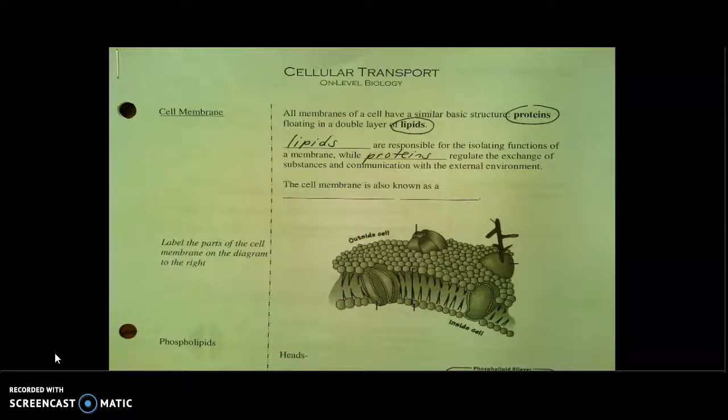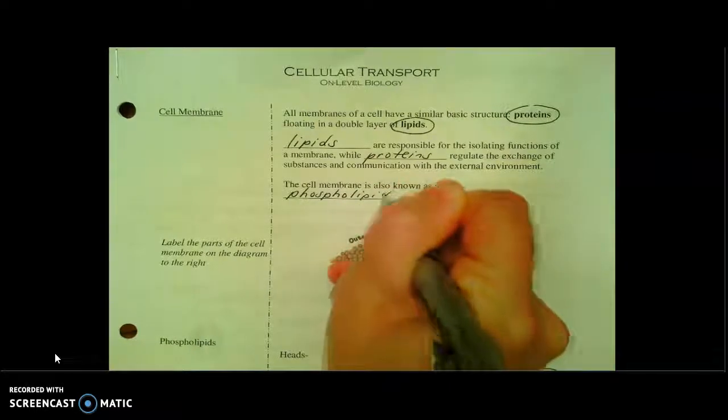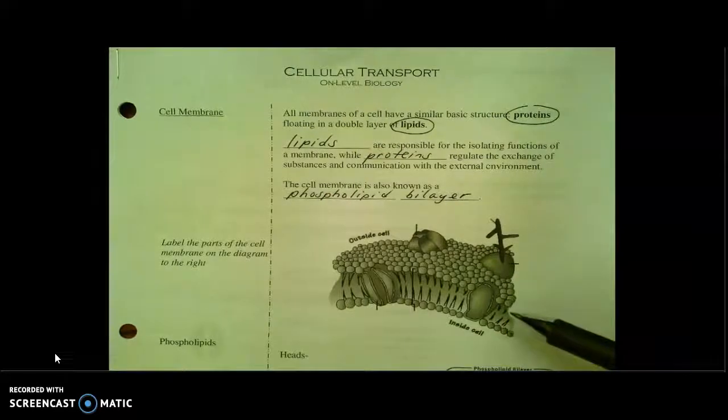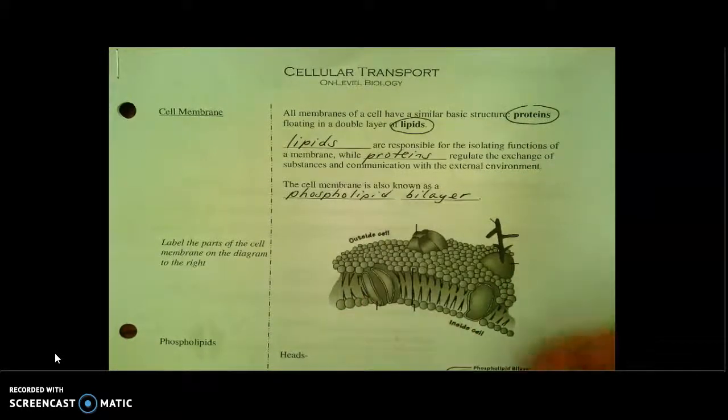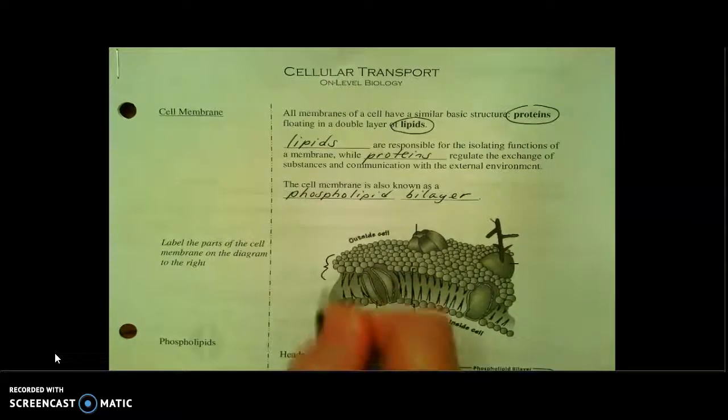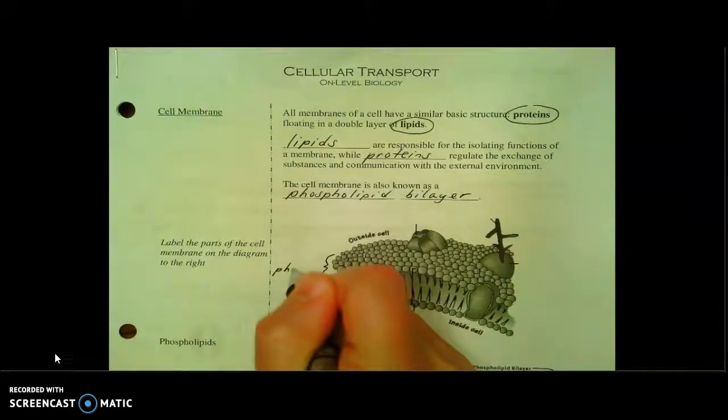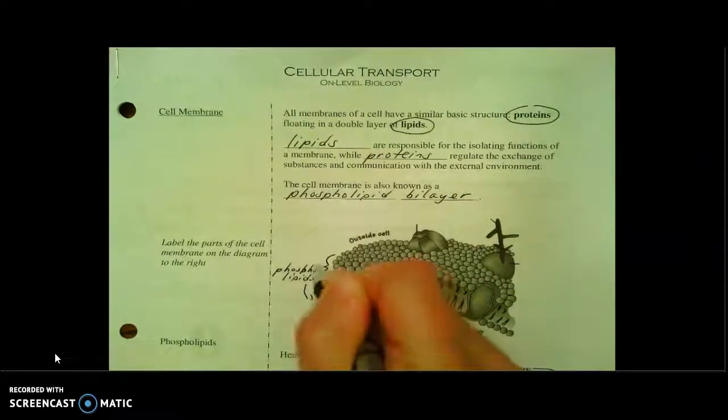Now we can also call the cell membrane a phospholipid bilayer. And here we've got an image that's going to show us the components of this bilayer. So first of all, with that prefix bi, what does that mean? Good. That's going to mean two layers. And here we can see one layer and a second layer. And both of those are made up of the phospholipids here and here.